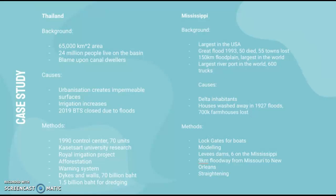Now the case study. Thailand and Mississippi have had very differing approaches to flood mitigation. For Thailand, the Chao Phraya River basin covers 65,000 square kilometers with 24 million inhabitants. Urbanization has created impermeable surfaces and irrigation has increased, contributing to flooding — in 2019 the BTS had to close because of floods. Methods include a control center of 70 units made in 1990, a royal irrigation project, afforestation, warning systems, dyke walls built for 70 billion baht, and 1.5 billion baht invested in dredging. Kasetsart University has also researched flood mitigation there.